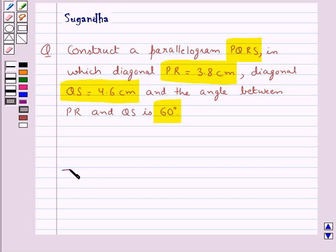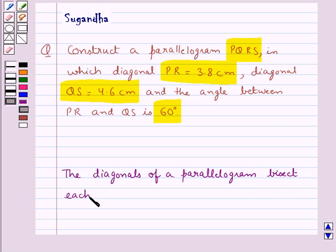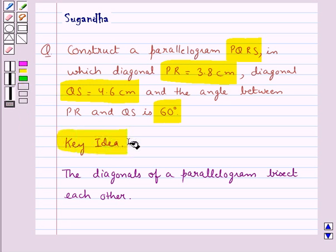Before proceeding with the solution, let's recall the fact which says that the diagonals of a parallelogram bisect each other. This is the key idea that we use in this question.